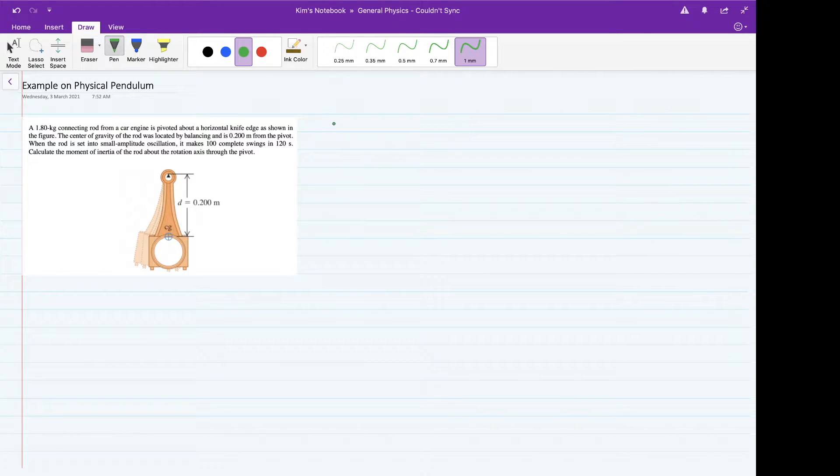First you need to make sense of what are the things mentioned in the problem. The problem mentioned that you completed 100 complete cycles in 120 seconds. So you might be asking, what quantity is this referring to? You have cycles per second, so that is referring to the frequency of the oscillation.